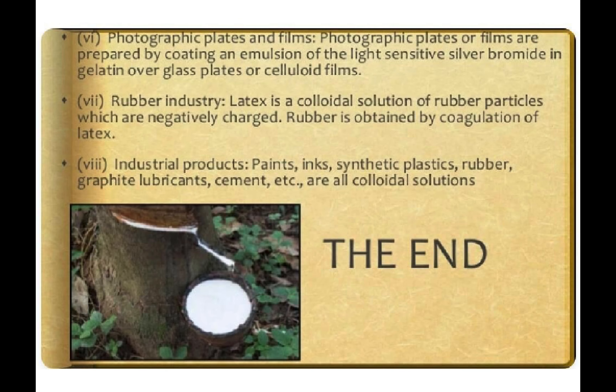Photographic plates and films are prepared by coating an emulsion of light-sensitive silver bromide in gelatin over glass plates or celluloid films. In the rubber industry, latex is a colloidal solution of rubber particles that is normally negatively charged; rubber is obtained by coagulation of latex. Industrial products like paint, zinc, synthetic plastics, rubber, graphite, lubricant, and cement are all colloidal solutions. With this we come to the end of the lesson on Surface Chemistry.